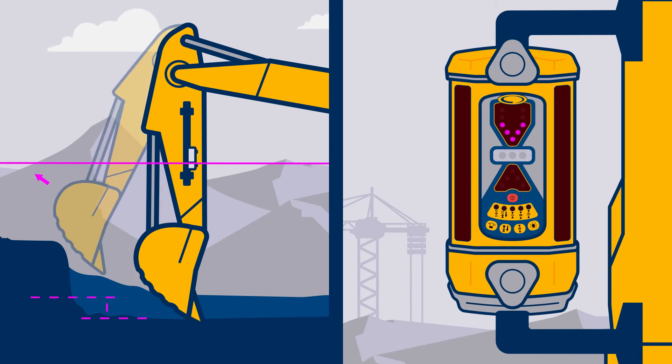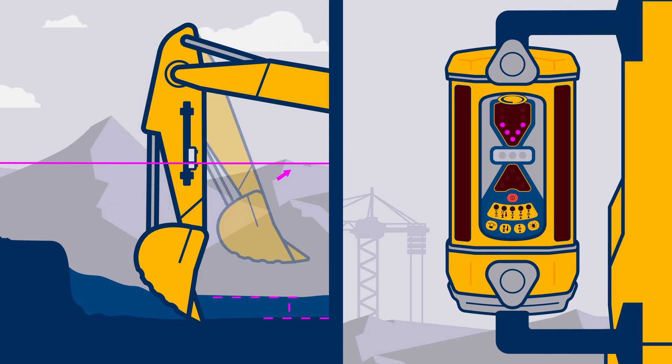Out of plumb is indicated by quickly flashing LEDs when the dipper arm is extended past vertical and slowly flashing LEDs when the dipper arm is retracted past vertical. The LEDs remain solid when the dipper arm is within the plumb tolerance. Solid LEDs equal good elevation readings.